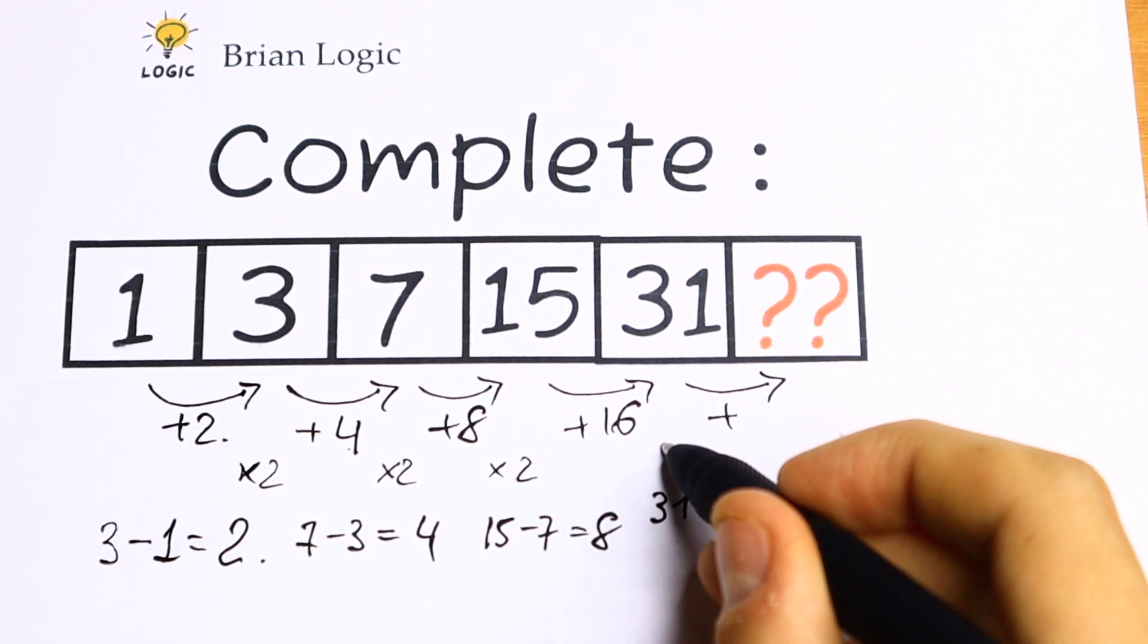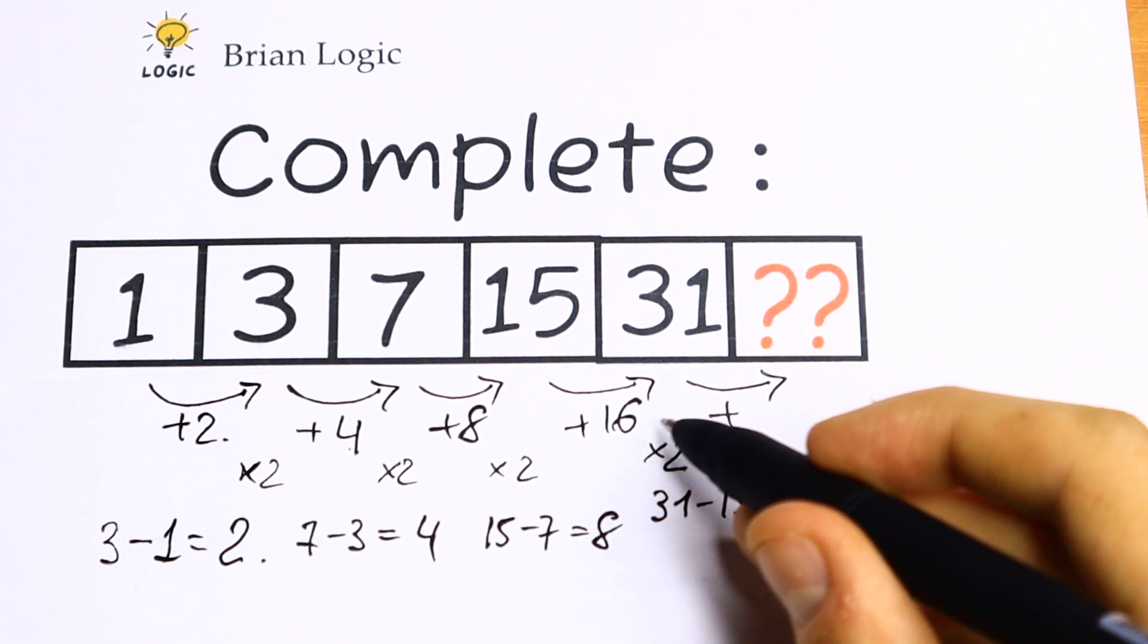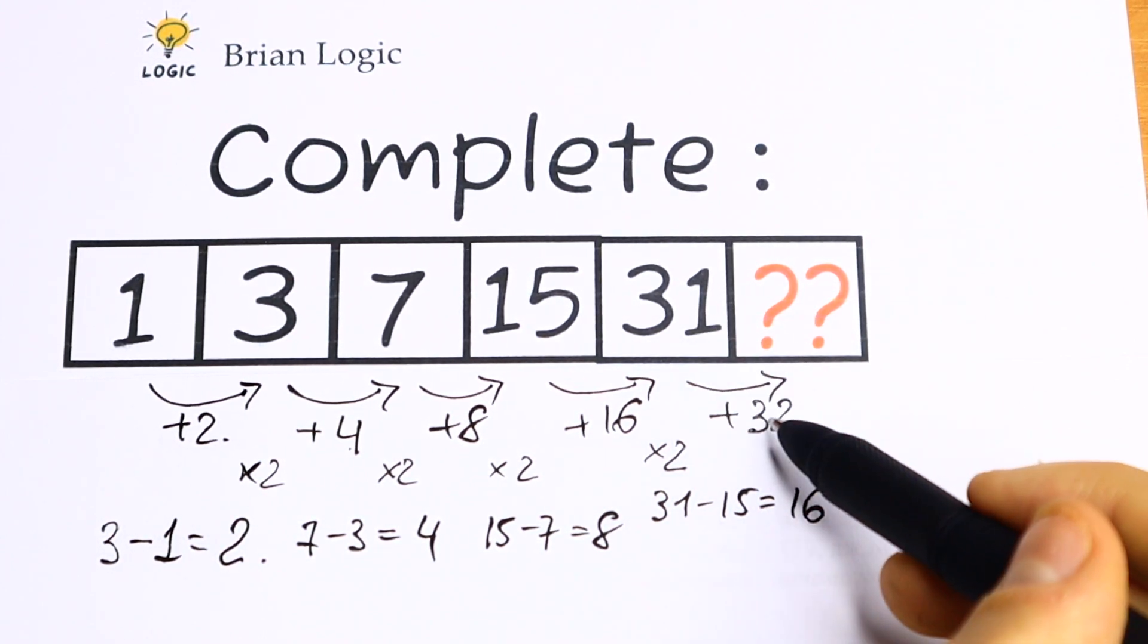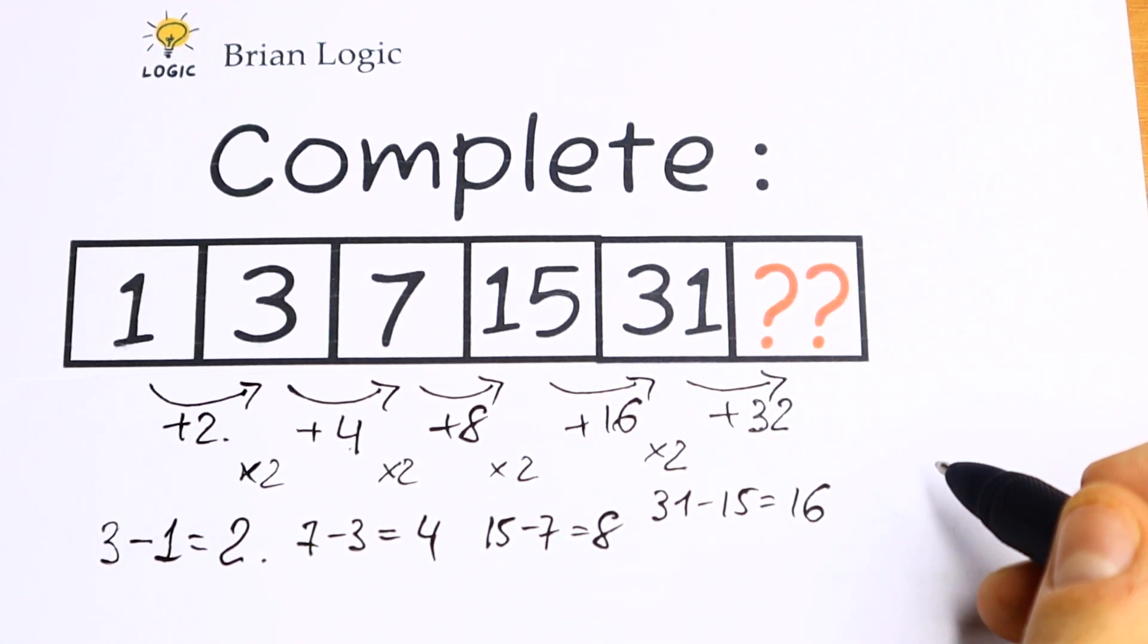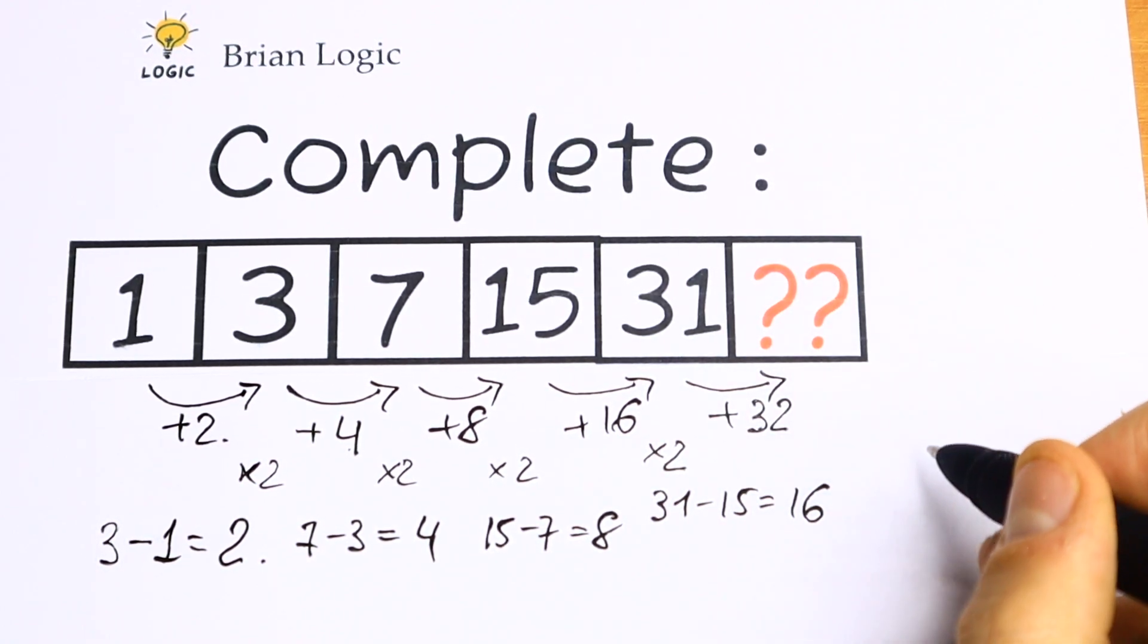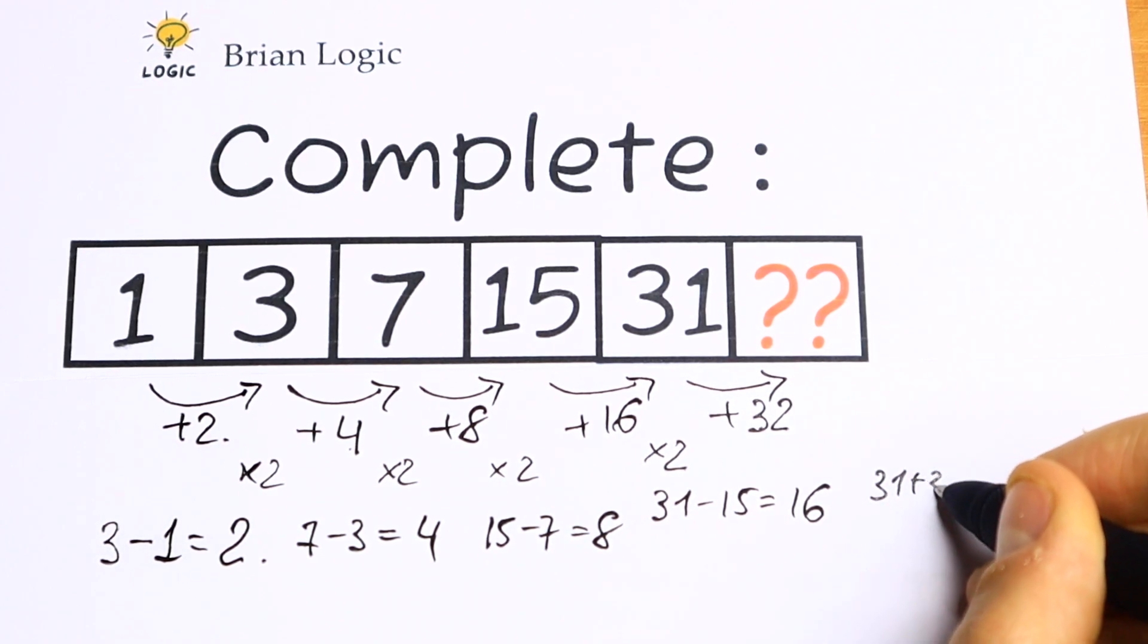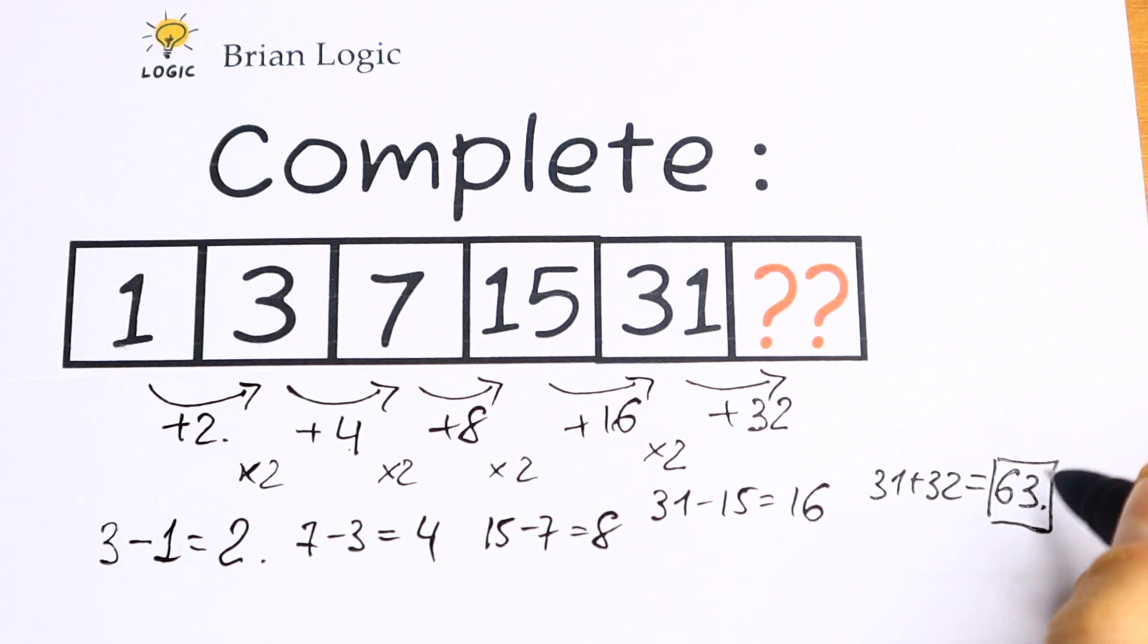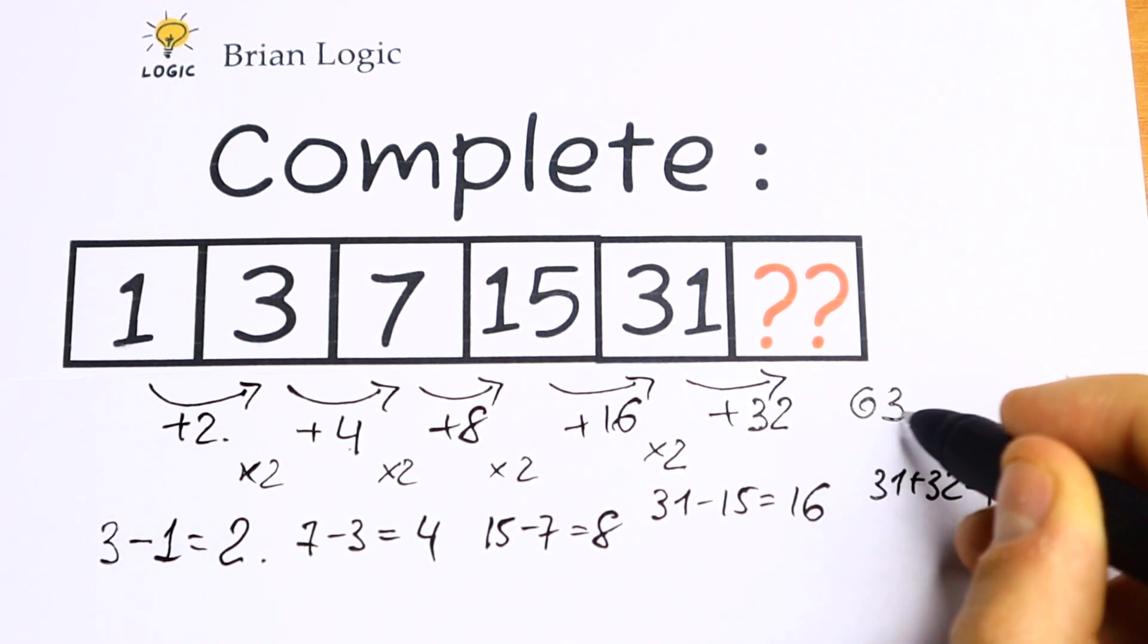And 16 multiplied by 2 gives 32. So we need to add 32 to 31. That will be our answer. 31 plus 32 equals 63. This will be our answer. The last number is 63.